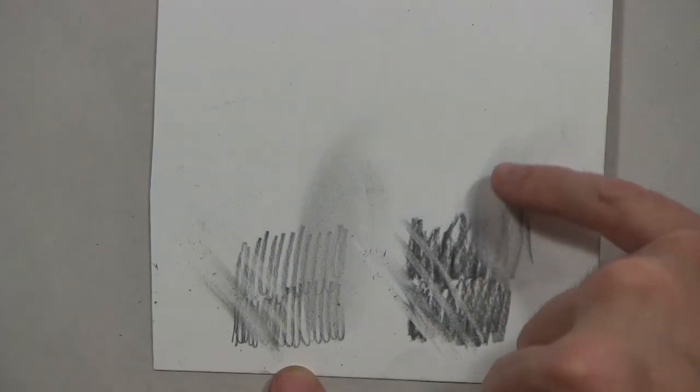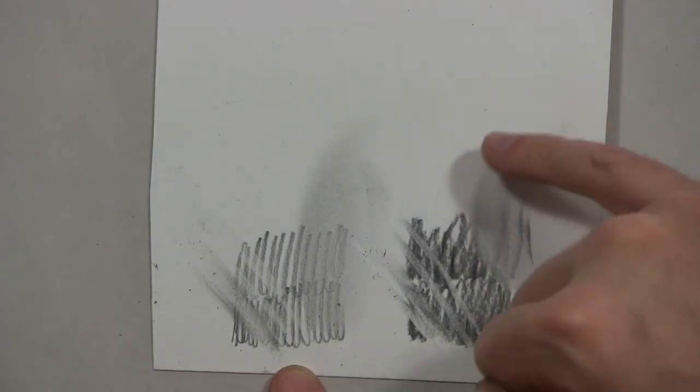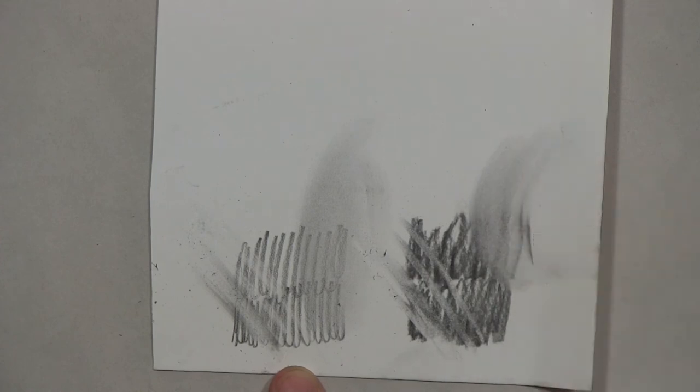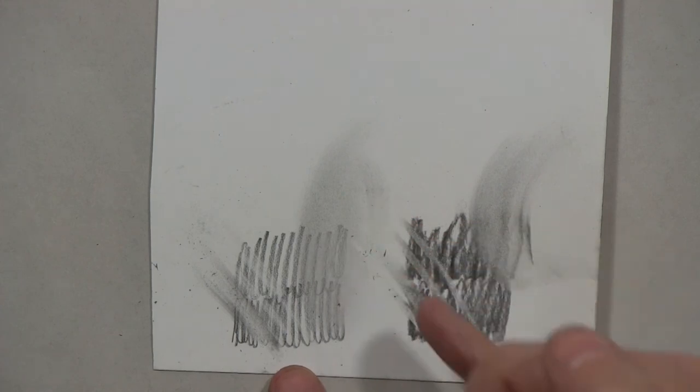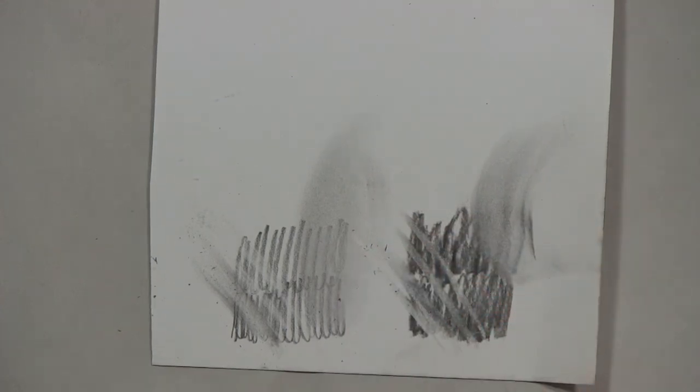Here's our Bristol board with charcoal. Look at this beautiful smudge, it's really soft and nothing really offensive looking about it. It erases pretty well. It's not too dark so it's not really capturing maybe the full richness that we can get with charcoal.